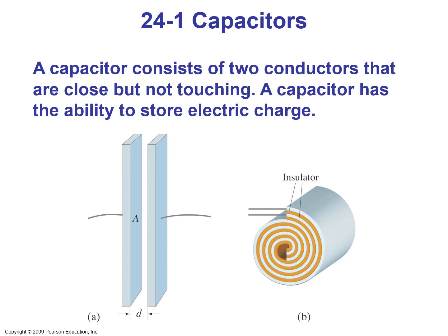Section 1: Capacitors. A capacitor can consist of two conductors that are close but not touching. A capacitor has the ability to store electric charge. Here at the bottom we have two configurations for capacitors. For part A we have two parallel flat plate conductors separated by distance d, and for part B we have two layers of conductors rolled together and separated by an insulator, which helps with increasing the capacitance and charge storage.